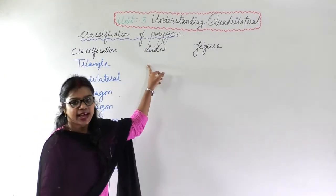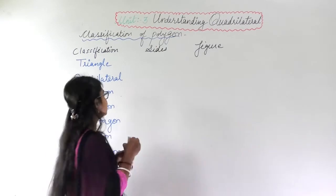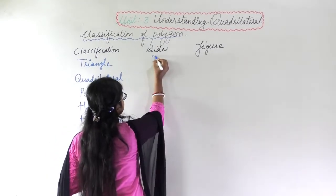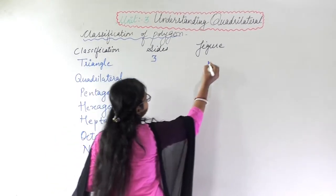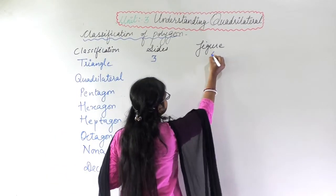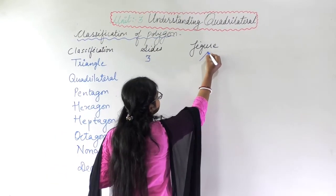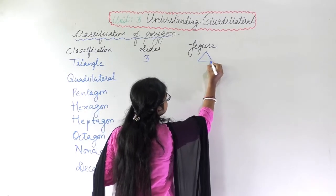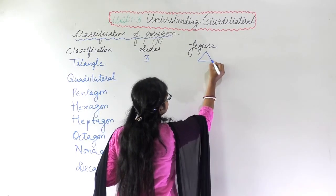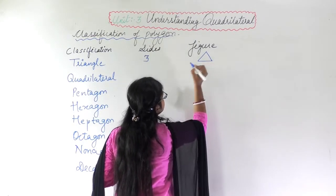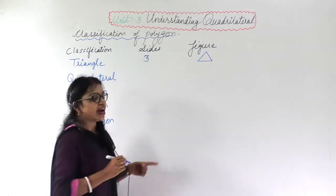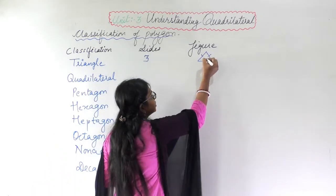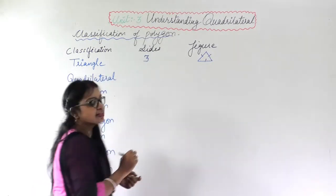Triangle — how many sides does a triangle have? Three sides. The figure of the triangle will look like this — a triangle having three sides.